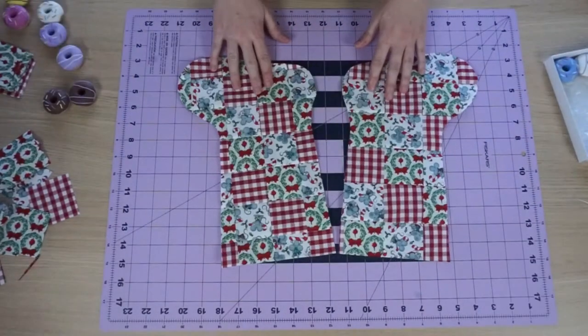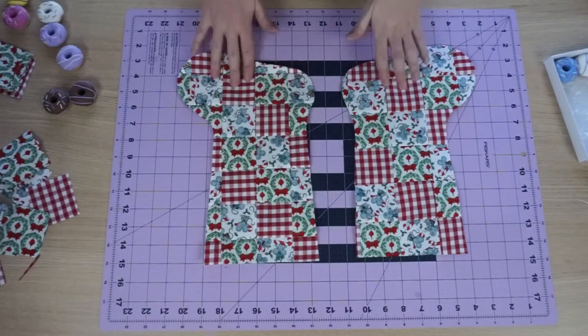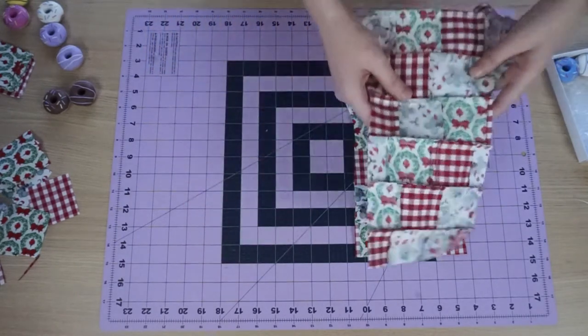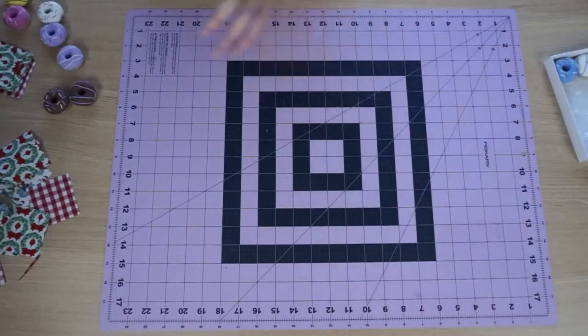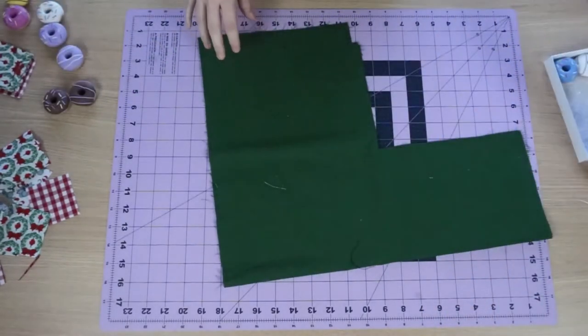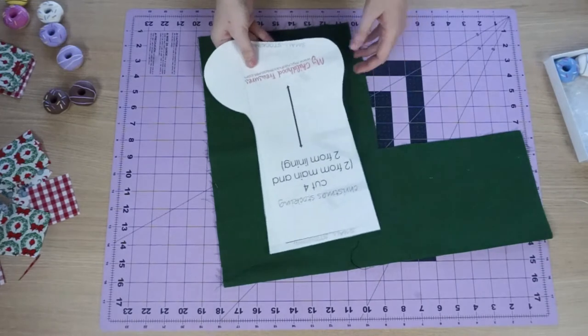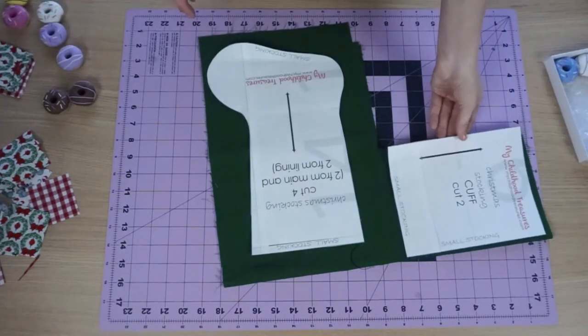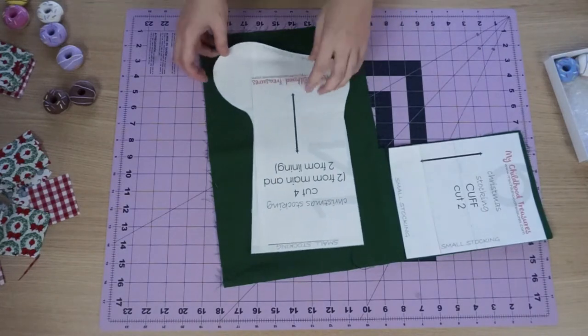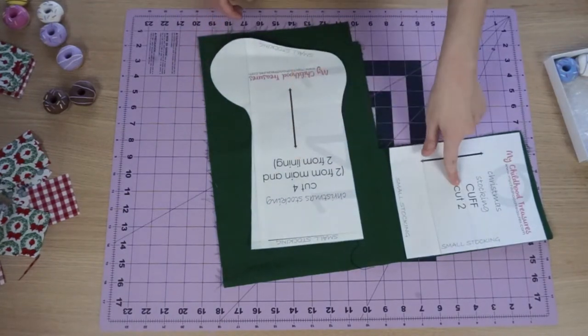So now we have two mirrored images of the patchwork. So we're going to set these aside, and then go ahead and cut out your lining using the same pattern piece as well as your cuff. So you'll need two lining and two from your cuff.